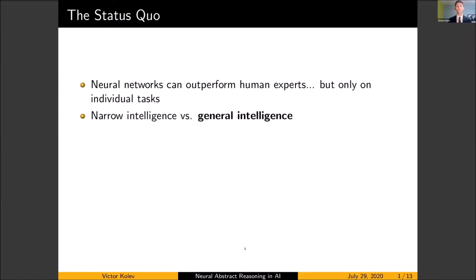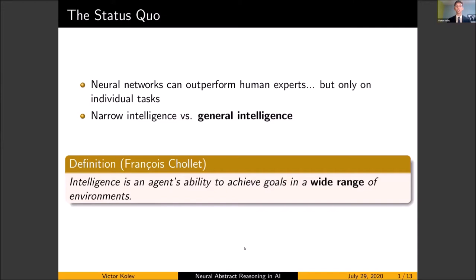In the future we would like to move towards general intelligence, which we can define as an agent's ability to achieve goals in a wide range of environments. The key thing here is that last part, a wide range of environments. This means we want our agent to be able from a very small set of experience to generalize to a much larger set of tasks, and this is what we normally refer to as human intelligence.